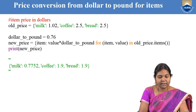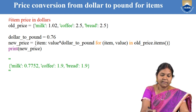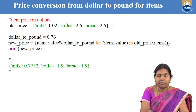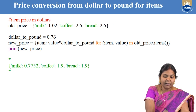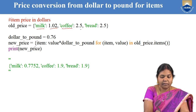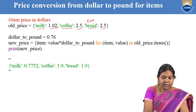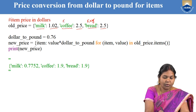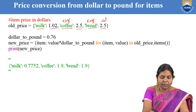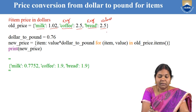Now let us go to the next example where we want to do price conversion from dollar to pound for items. There is a dictionary available which is a collection of items. Milk is one item with price 1.02, coffee is another item with its price given, and bread is an item with its value given. Bread, coffee, and milk are the keys and the values are their prices in dollars. We want to convert those values from dollar to pound.